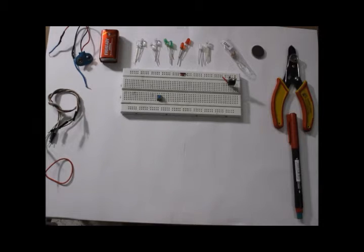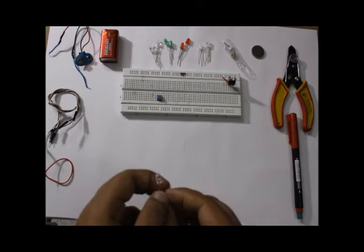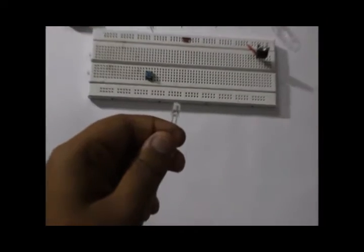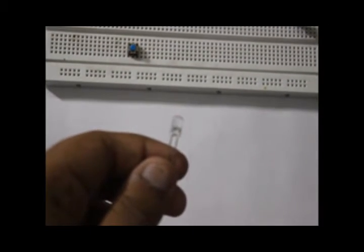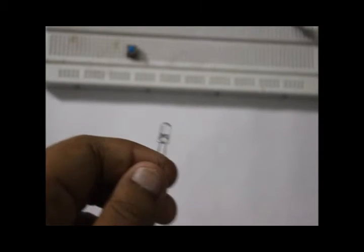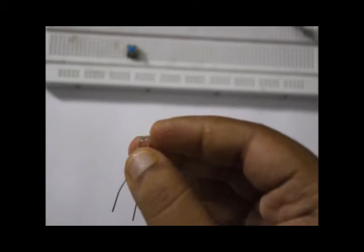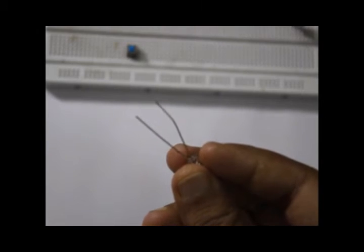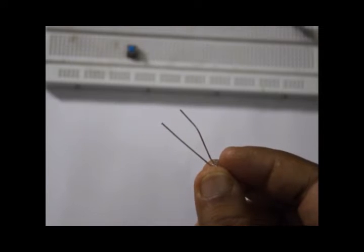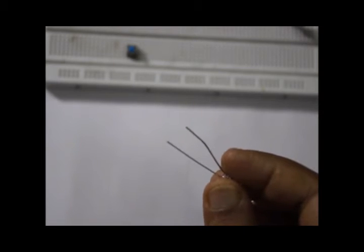First of all, if we look at a LED, this is a 5mm LED. Let me zoom. You can see that one LED has two legs - one is longer and another is shorter. The longer leg is the positive terminal, shorter is the negative terminal. The longer is the anode and the shorter is the cathode.